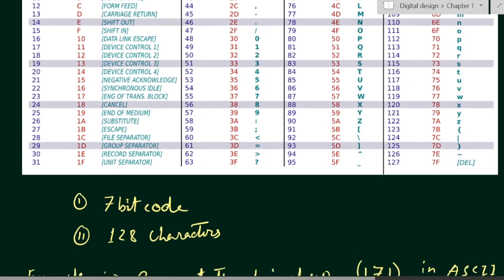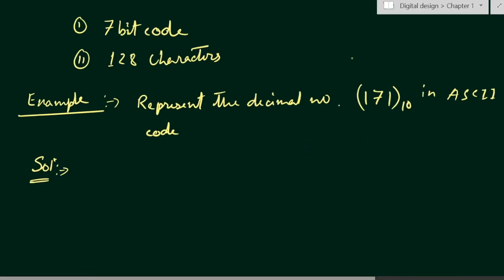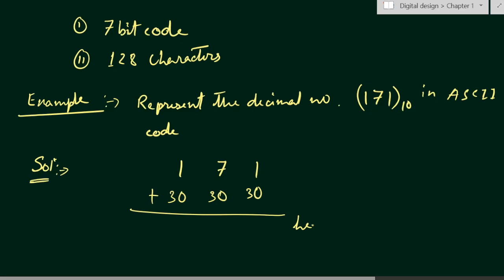So first of all we will find out the hexadecimal equivalent of this number. That means we have to add 30 to each of the decimal digits. So here we will have the hexadecimal numbers: we will have 31, then 37, and then 31. So this is the hexadecimal equivalent.